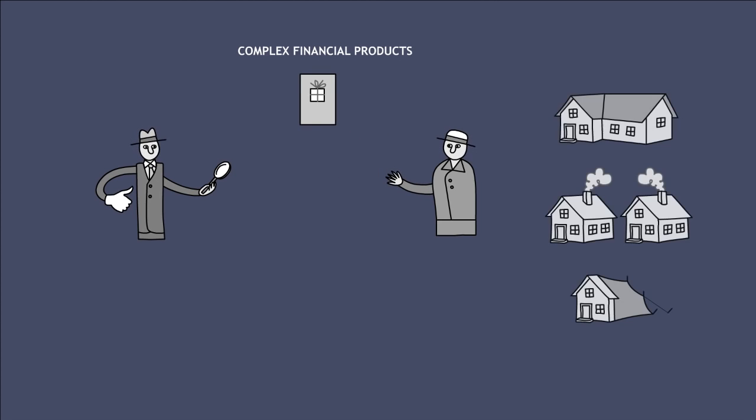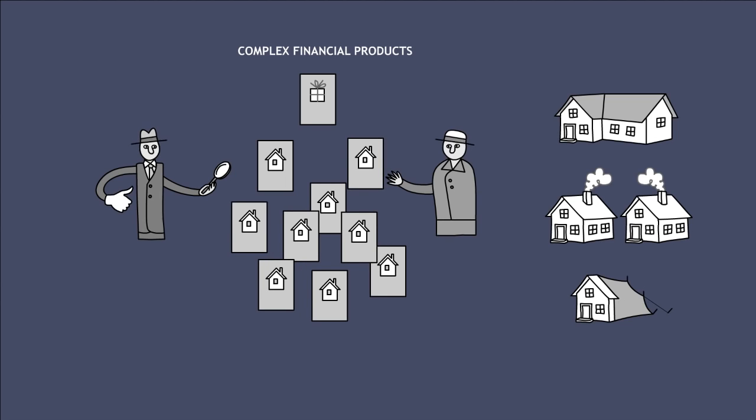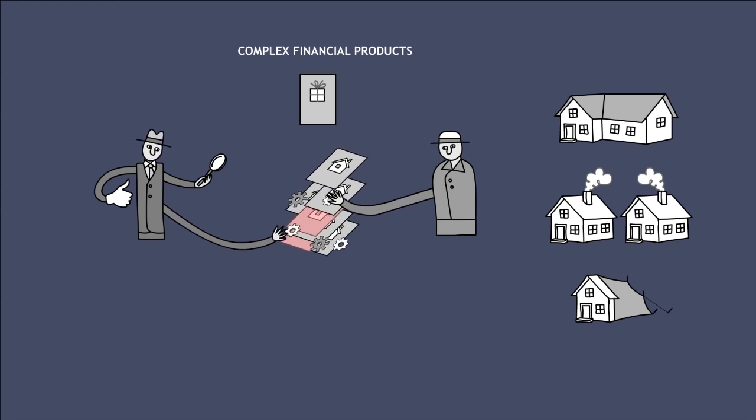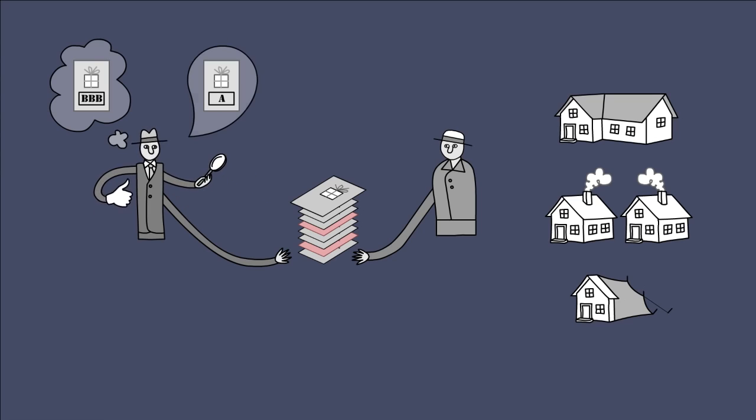A further conflict of interest arises from the fact that rating agencies also assess so-called complex financial products. These financial products are packages consisting of various base values and derivatives, which are often packaged together to bring high-risk loans to the market. They are initially created by the rating agencies in collaboration with their clients and are then usually rated by the same agency. In other words, the rating agencies evaluate their own product. This also threatens the objectivity of the credit ratings.